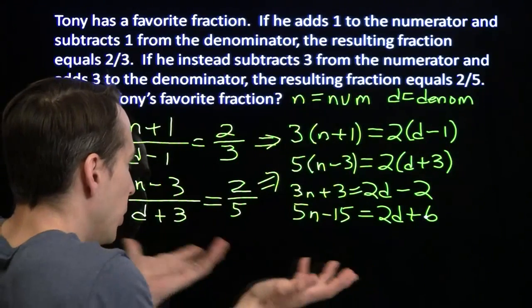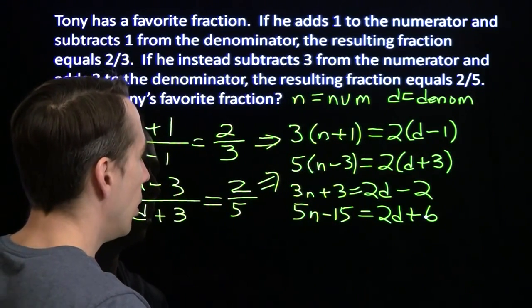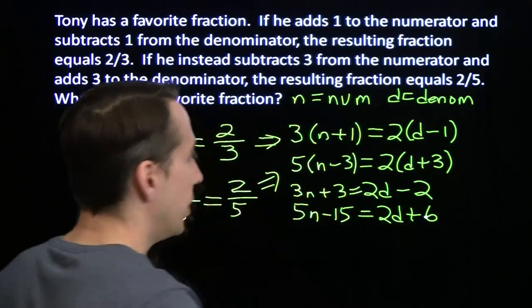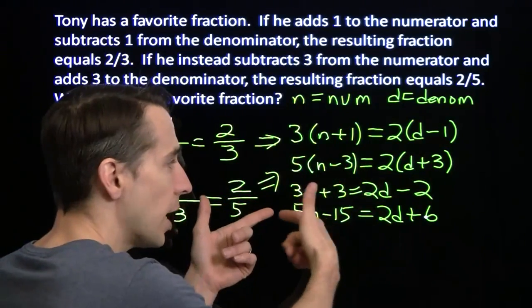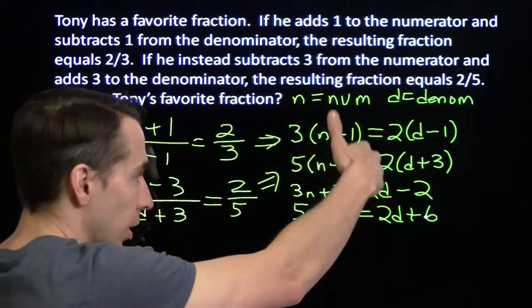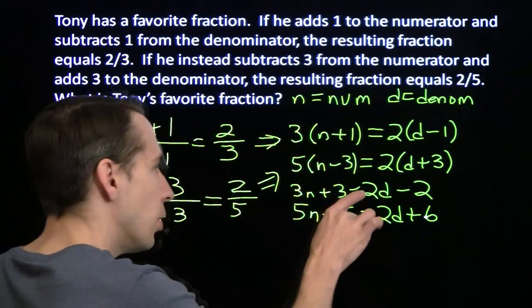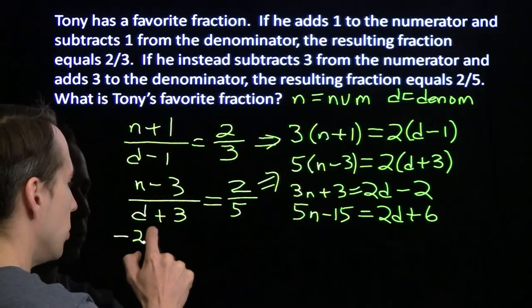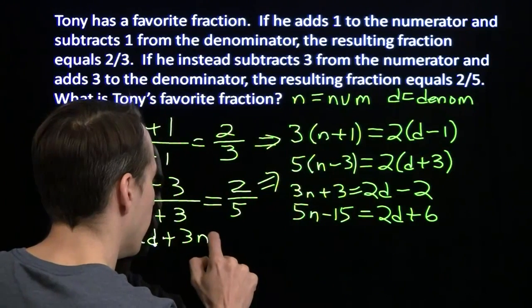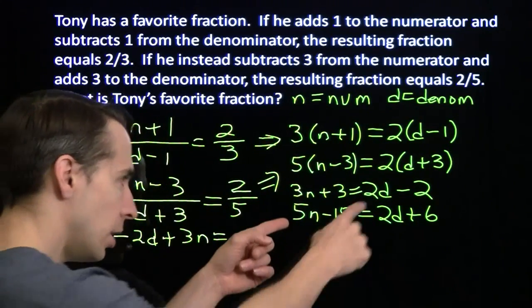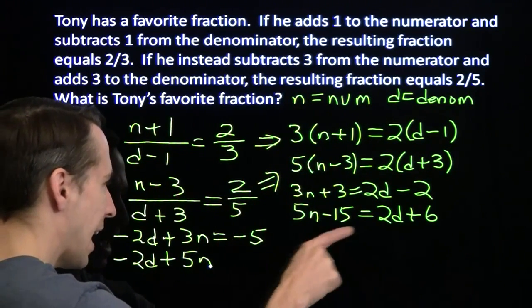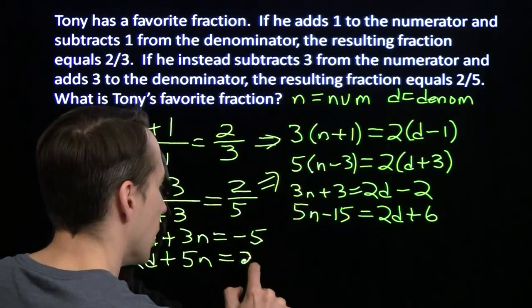I mean, right here, I'm looking at this and seeing we can set up the elimination basically right now. But instead, first, get organized. Always stay organized. I'm going to bring all the variables over here, all the constants over there. But if you wanted to try this at home, try subtracting the second equation from the first equation right now. You can see that these d's eliminate. You can eliminate the d's right there. See if you can do that on your own. But I'm going to stay organized here. I'm going to bring the 2d over. I'm going to go minus 2d plus 3n. I'm going to subtract the 3 over there. It's negative 5. Do the same thing here. We get minus 2d plus 5n. Add 15 to both sides. We'll get 21.